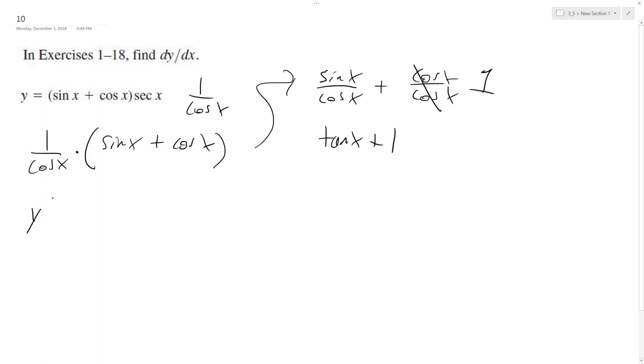So y prime is going to be equal to d/dx of tangent of x plus d/dx of 1. And what we get is y prime equals secant squared x plus the derivative of 1, which is 0.